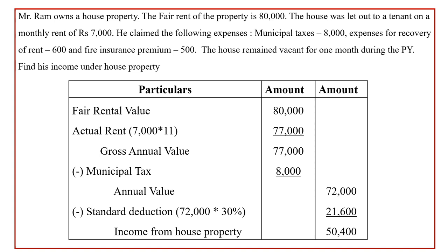Mr. Ram owns a house property. The fair rent of the property is ₹80,000. The house was let out to a tenant on a monthly rent of ₹7,000. He claimed municipal tax ₹8,000, expenses for recovery of rent ₹600, and fire insurance premium ₹500. The house remained vacant for one month. This is a let out property, so we must calculate annual value.